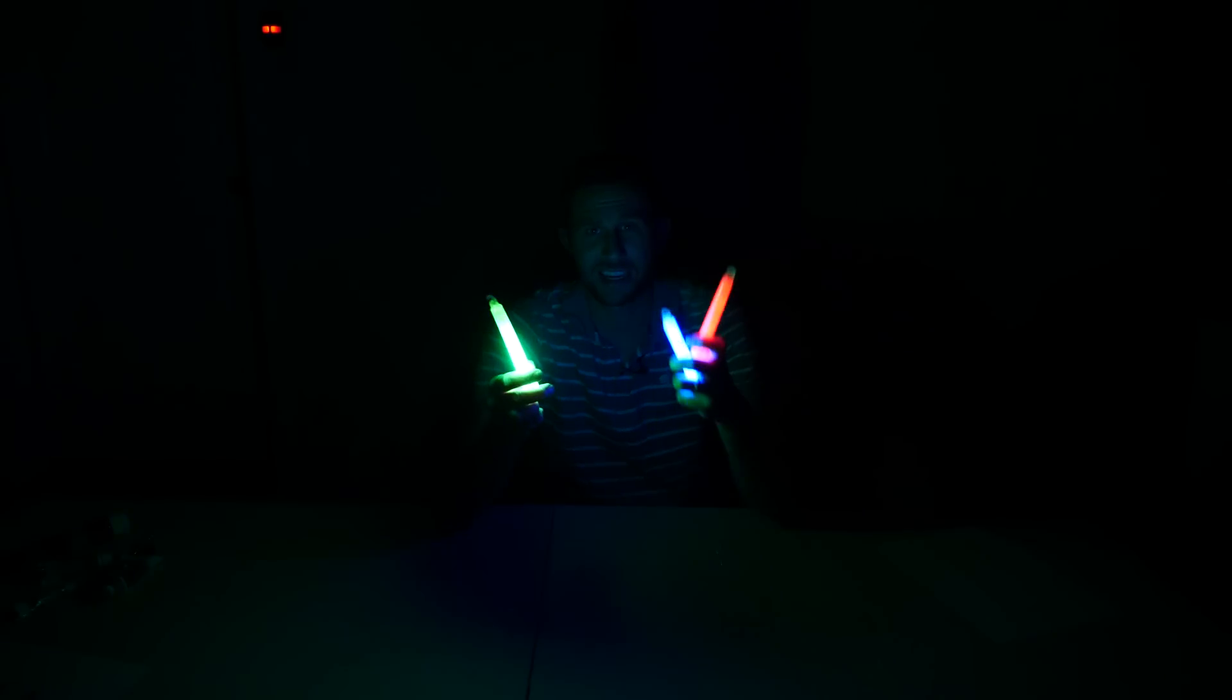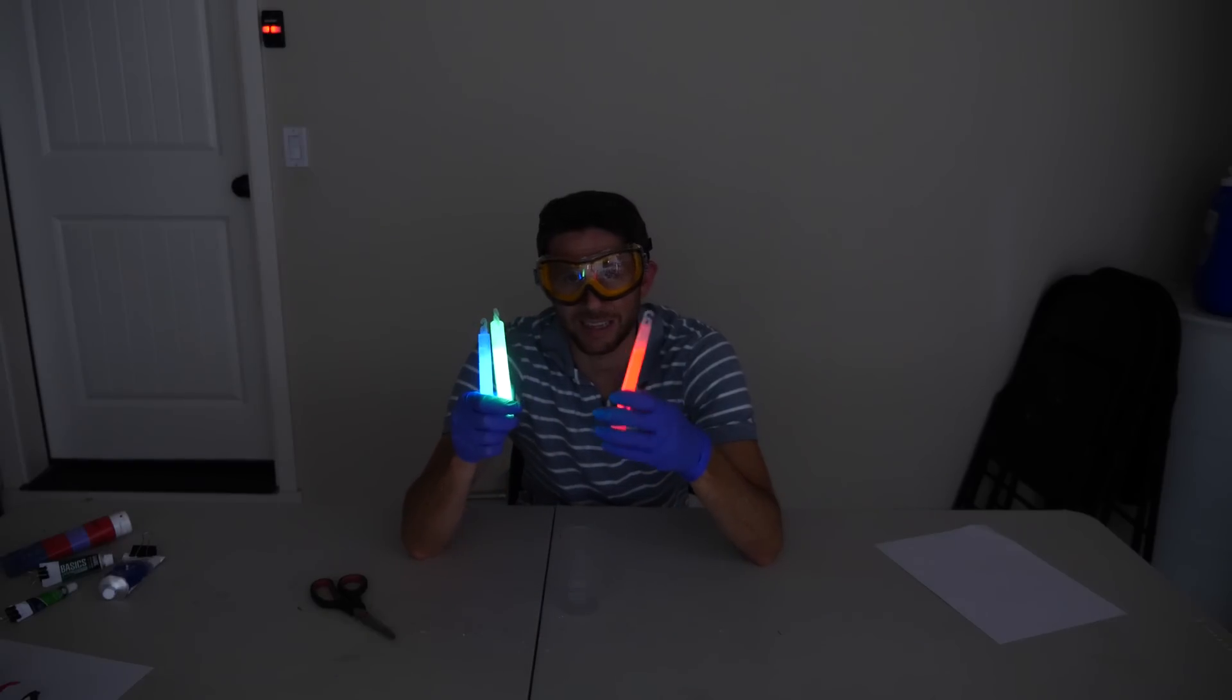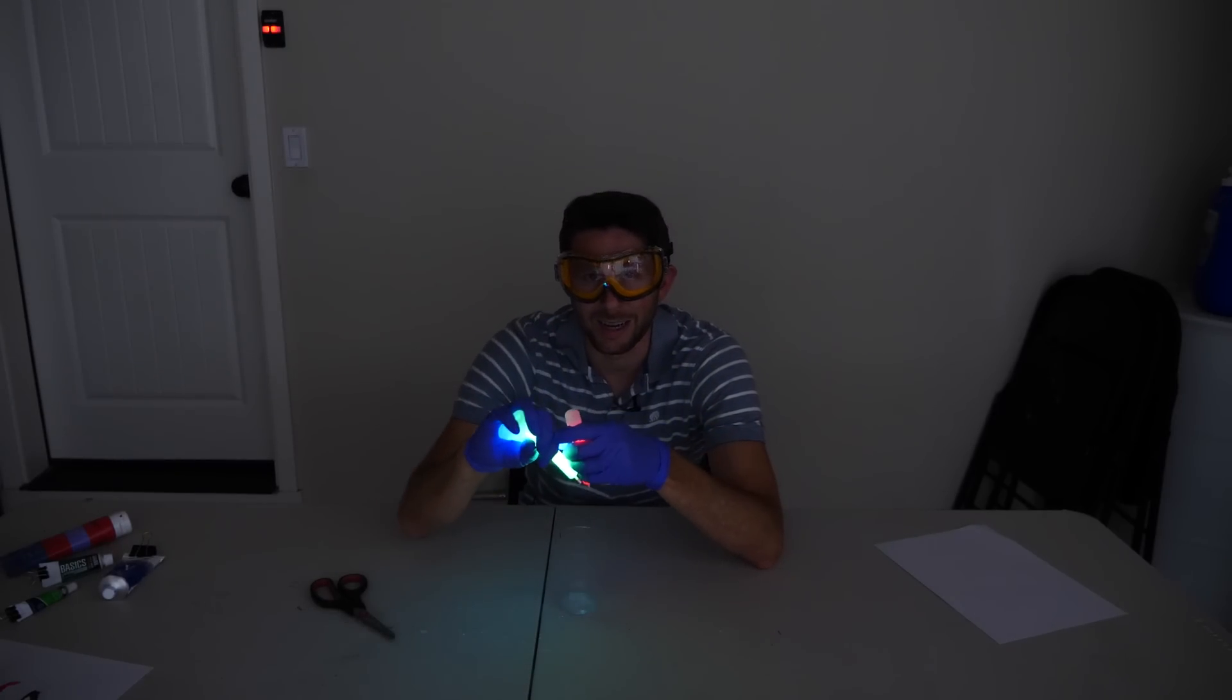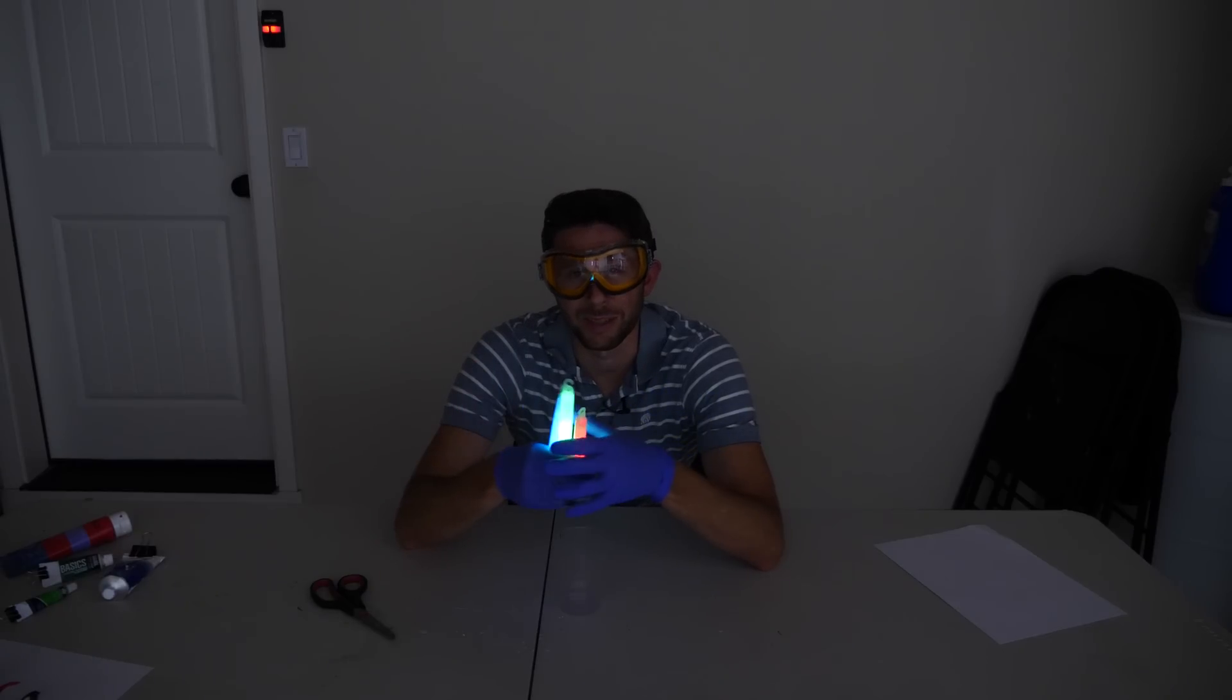Okay and now here's the interesting question. So I have here a red glow stick, a blue glow stick, and a green glow stick. And I have this blue liquid, this green liquid, and this red liquid. So if I mix these together in a cup, what color is it going to produce?